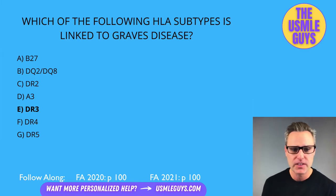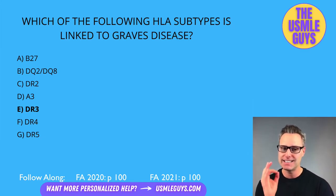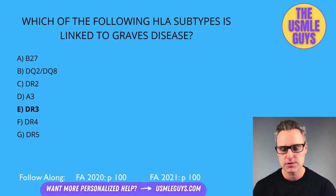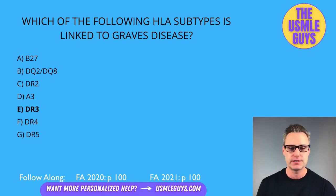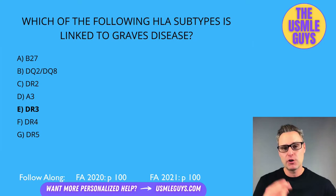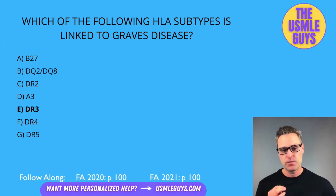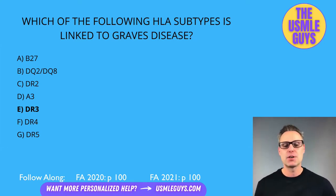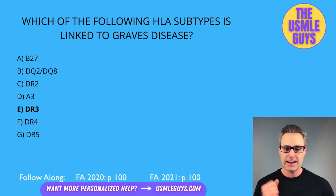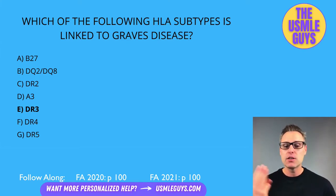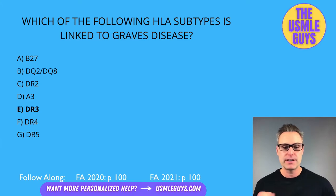A3 is associated with hemochromatosis. B8 is associated with Graves disease, Myasthenia Gravis, and Addison disease. B27 is associated with reactive arthritis, psoriatic arthritis, ankylosing spondylitis, and IBD-associated arthritis conditions.